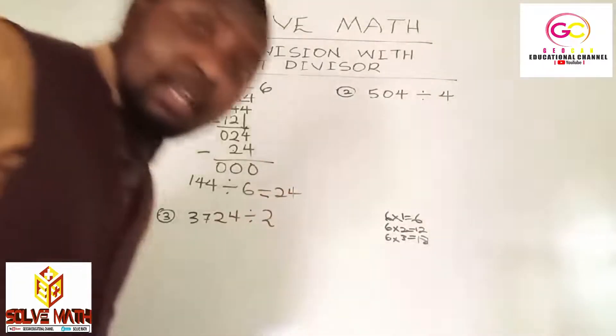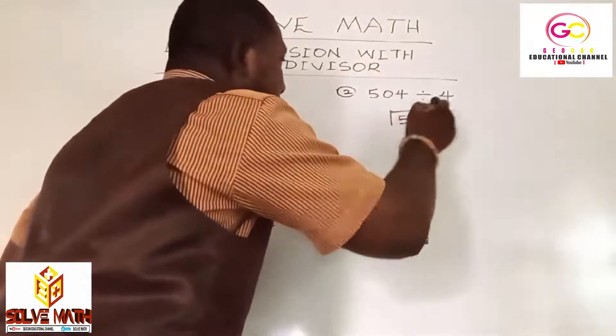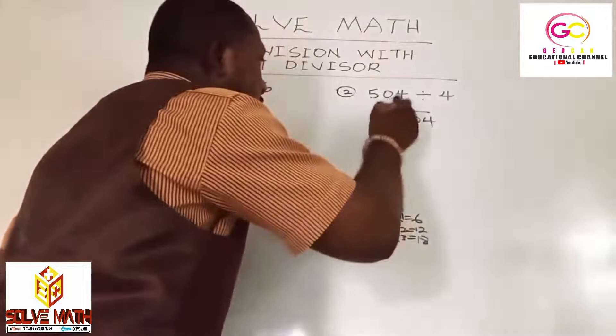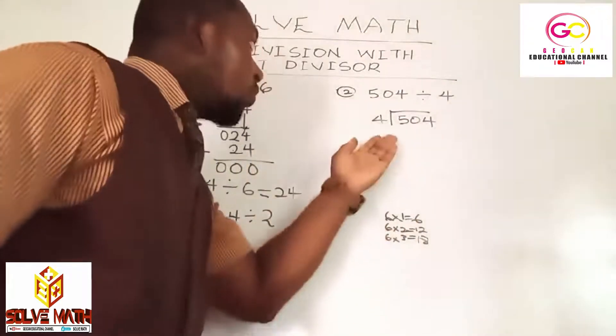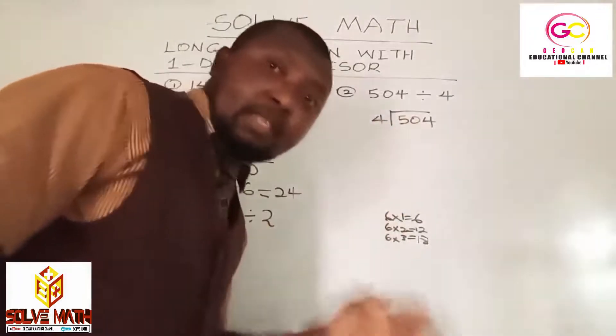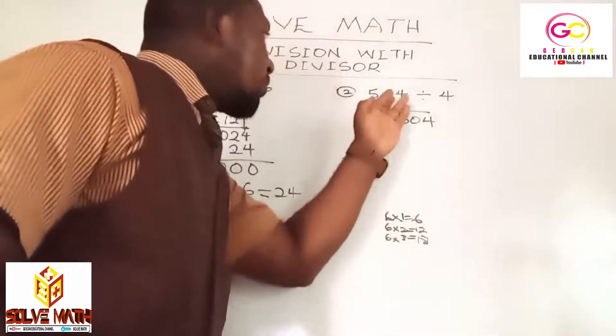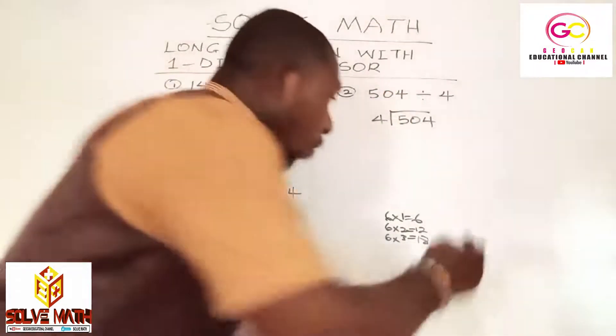Let's tackle the second one. Pay critical attention. Your dividend, 504, goes in, and your divisor, which is 4, comes out. This means we are using the 4 times table. Now, we are taking it digit by digit. As I said, math is step by step. 4 will go into 5 how many times? 4 times 1 is 4.